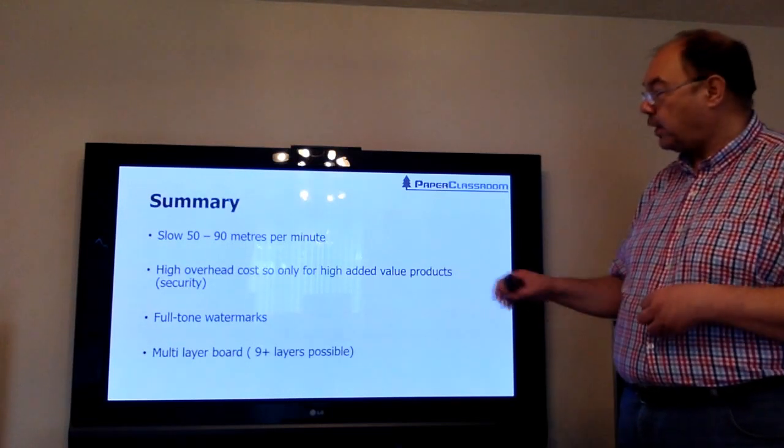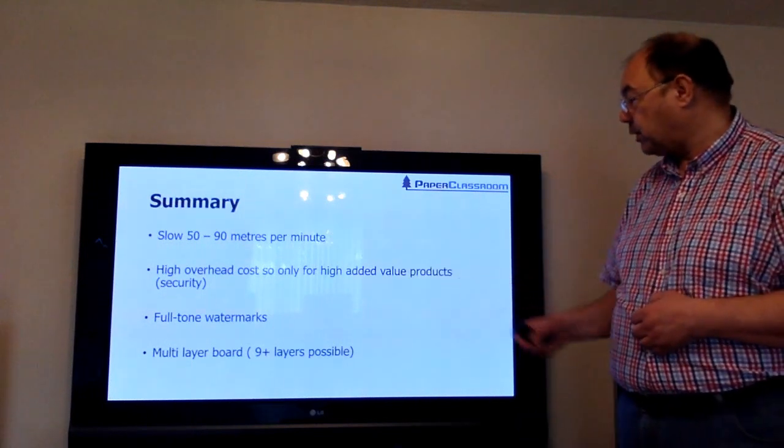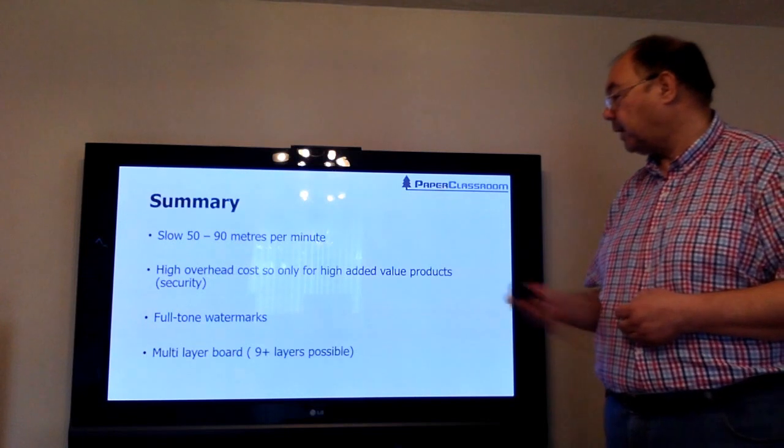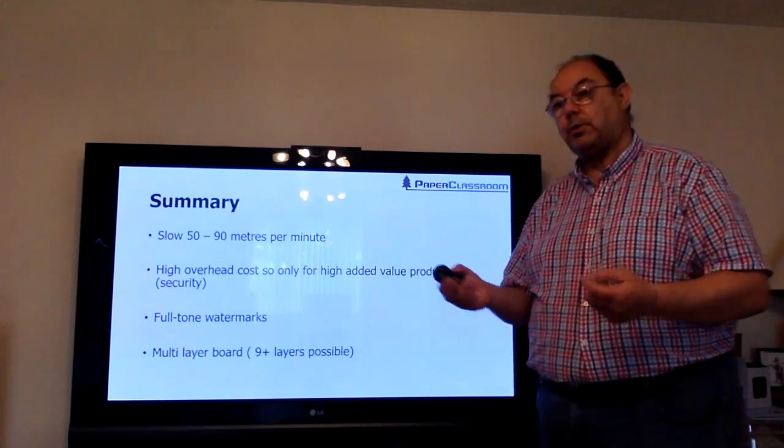And finally you can also use vat machines in combination to produce multi-layer board with possibly nine or more layers, used for things like cardboard and old-fashioned suitcases.